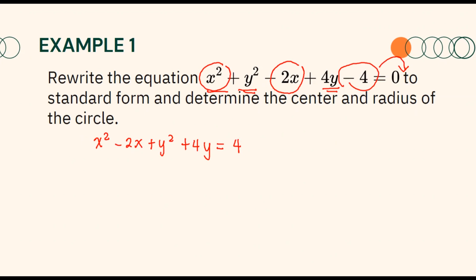Next, we complete the square. Do not forget to write open and close parentheses here as grouping. Remember, when we do completing the square, we make this binomial a perfect square trinomial. To do that, we divide the numerical coefficient of x by 2 then square the answer. So negative 2 divided by 2 equals negative 1, then we square this — negative 1 squared gives us positive 1. Therefore, this binomial will become x squared minus 2x plus 1.